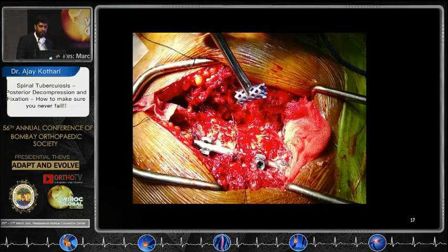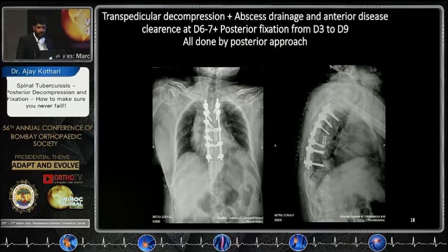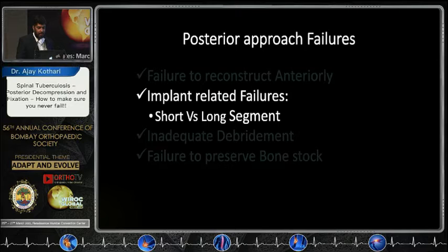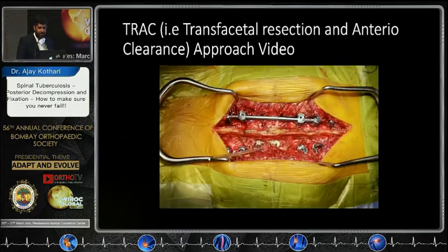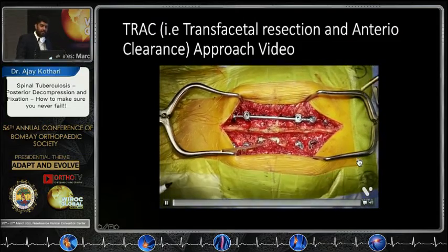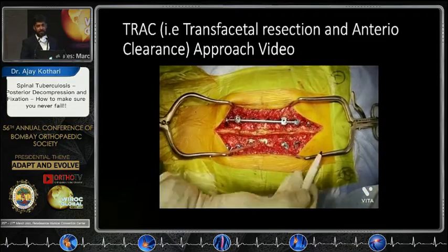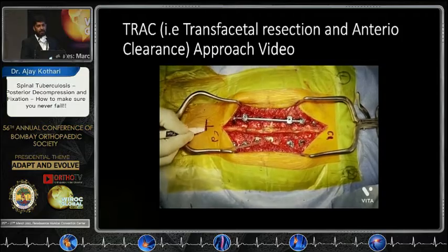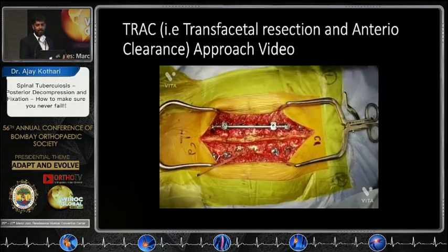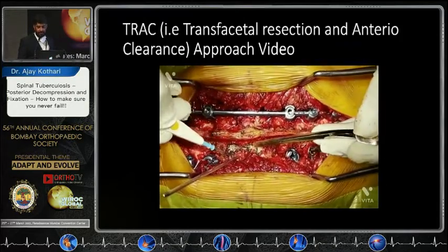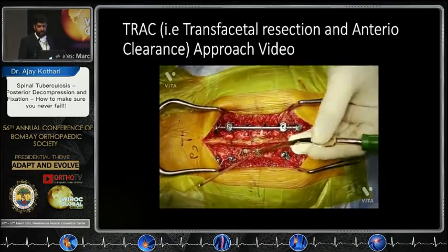In some cases, you also need to do a costotransversectomy. Regarding short versus long constructs, it is always better to stabilize longer — by default, construct long. When there is not much angulation or deformity, we use a transfacetal technique: we fix implants on one side, keeping the midline intact, go through the facetal area anteriorly, completely clear the anterior disease, and decompress the cord from only one side. Since one side and the midline remain intact, you don't need anterior reconstruction in most cases without significant deformity. We have been using this approach for nearly seven to eight years.